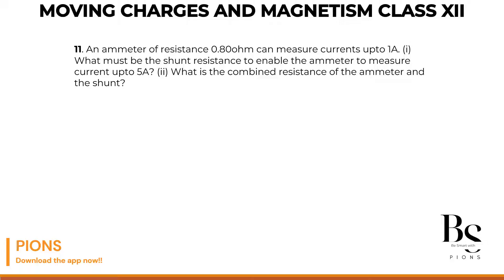What current through the galvanometer, that is IG, which is 1 ampere, and what is the resistance of this galvanometer, RG, that equals 0.80 ohms. The question says: what must be the shunt resistance to enable the ammeter to measure current up to 5 ampere?